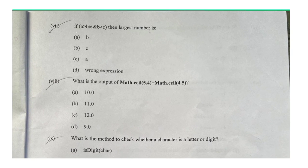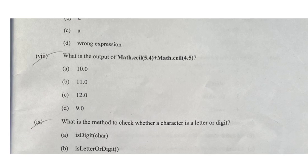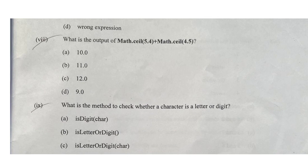Question seven: if A is greater than B and B is greater than C, then A is the largest number. So A is the largest.